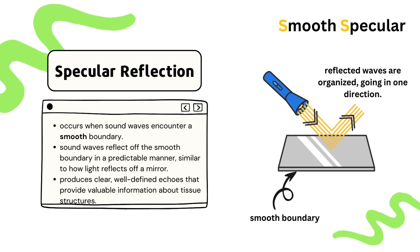Specular reflection occurs when sound waves encounter a smooth boundary and this results in clear, well-defined echoes. An example of specular reflection is like shining a flashlight onto a flat, reflective surface. The light is going to bounce off the surface in one specific direction, creating a distinct, organized reflection. Similarly, in ultrasound imaging, specular reflection produces clear, sharply defined echoes when the sound waves strike a smooth boundary.